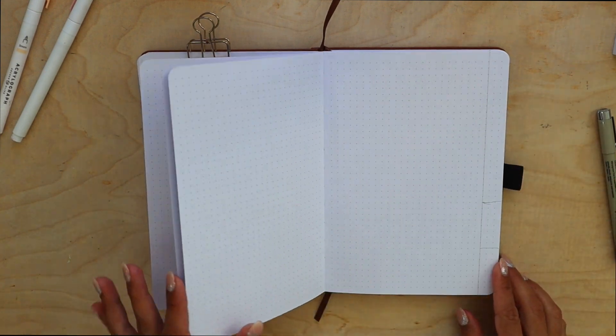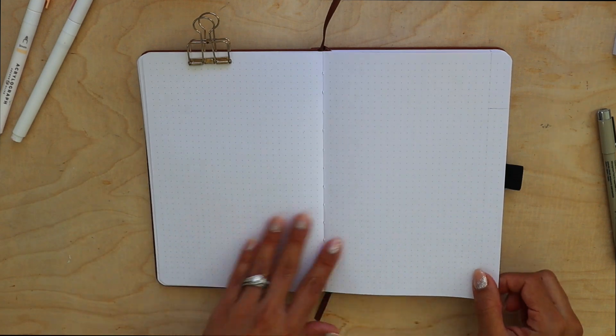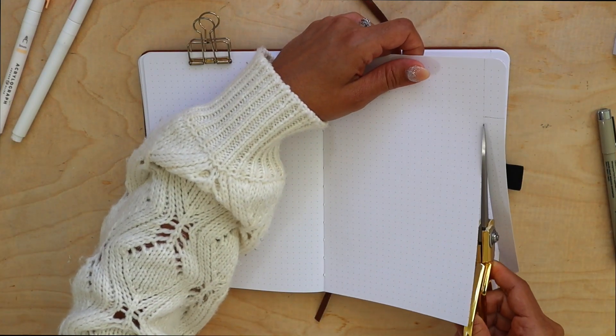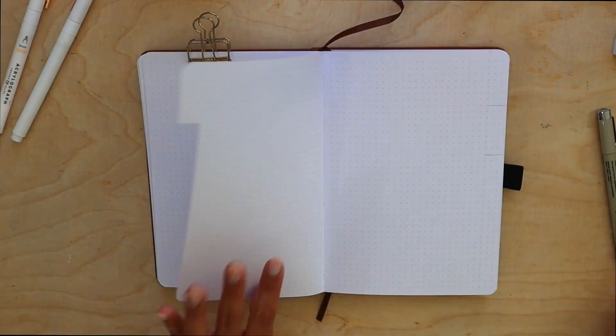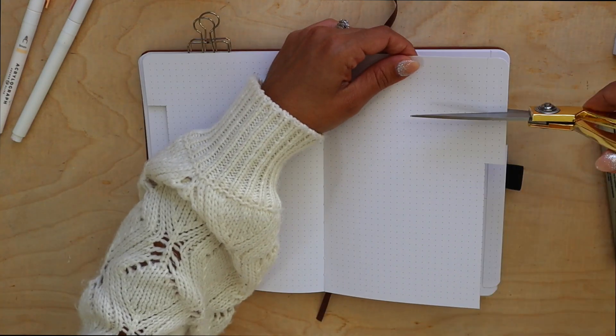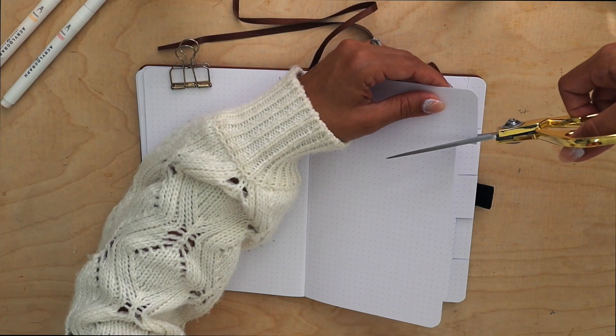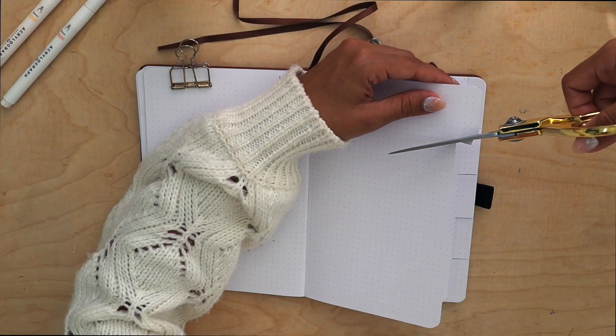When you're done with that, it's time to cut. Now don't be afraid for this portion - you have all of your lines to give you guidance. One thing I like to do, which is totally optional, is to round the corners on the top and the bottom of each page you're cutting into so they match the rest of the notebook, and I like to angle the tabs as well.